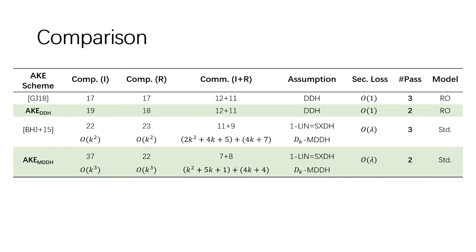The comparison of our AKE scheme with other tightly secure AKE schemes with explicit authentication is shown in this table. You can see that the computation and communication cost is comparable to that in GJ18 or BHJ+15 in the random oracle model and standard model, while the number of passes decreases from 3 to 2.